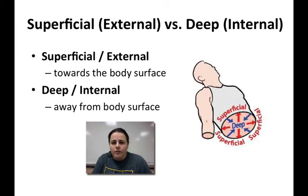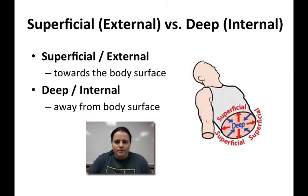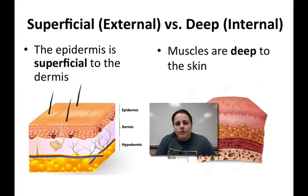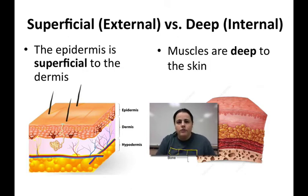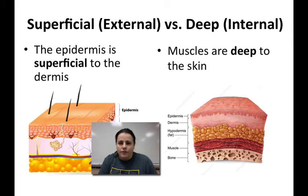The last two directional terms are superficial and deep, or external and internal. Superficial means towards the surface of the body, and deep means away from the surface. The epidermis is the outermost layer of skin, so it is superficial to the dermis. The muscles are found below the skin, so the muscles are deep to the skin.